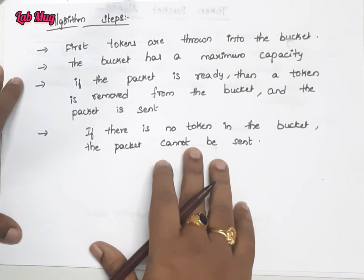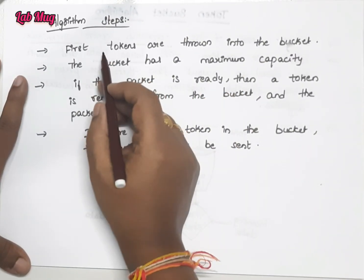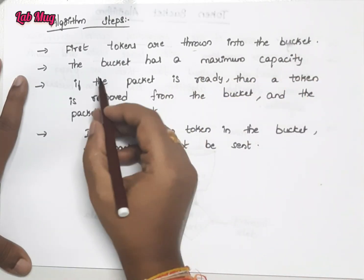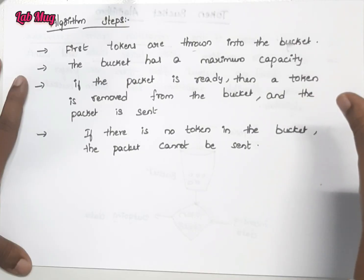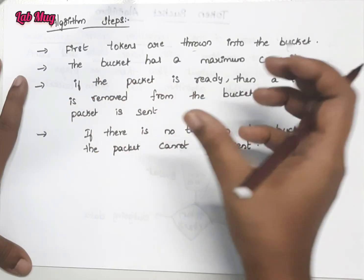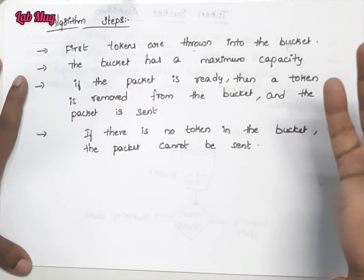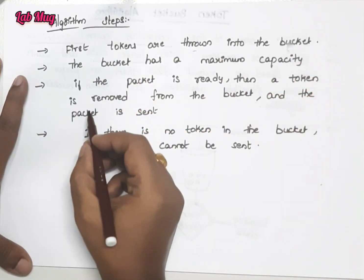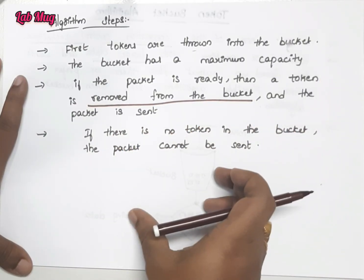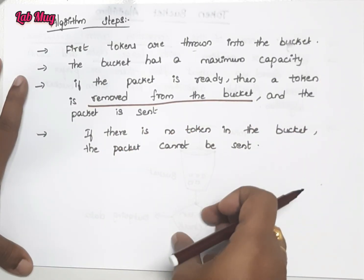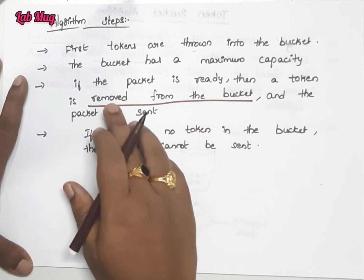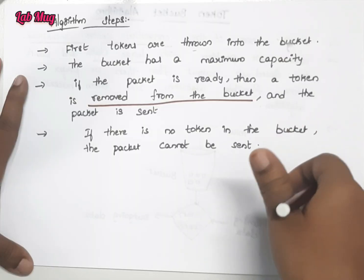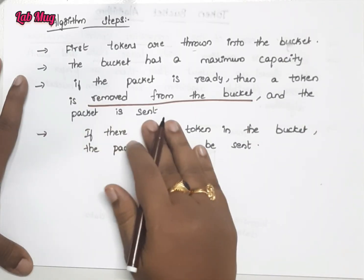The simple algorithm steps are: first, tokens are generated and thrown into the bucket. The bucket has a maximum capacity. When a packet is ready to send, we check whether a token is available. If a token is present, we remove it from the bucket and pass the packet. The token is removed first, and then the packet is passed and sent.